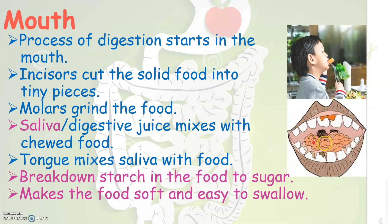After you grind the food, it looks something similar to what you see here. Saliva, otherwise called as the digestive juice, which is present in our mouth, will mix with the food that is chewed. Tongue is the organ which mixes saliva with food. Saliva helps in the breakdown of starch, which is a complex carbohydrate present in the food, and converts it into sugar, which is a simple carbohydrate.